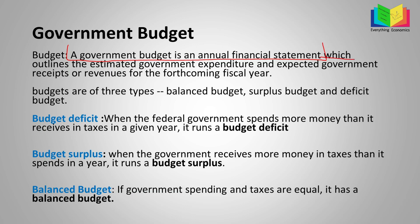The second part says it outlines the estimated government expenditure and expected government receipts or revenues for the forthcoming fiscal year. This financial statement outlines the estimated government expenditures — how much the government is expected to spend — and their expected receipts or revenues — how much they are expecting to earn. That is what the financial statement is about.